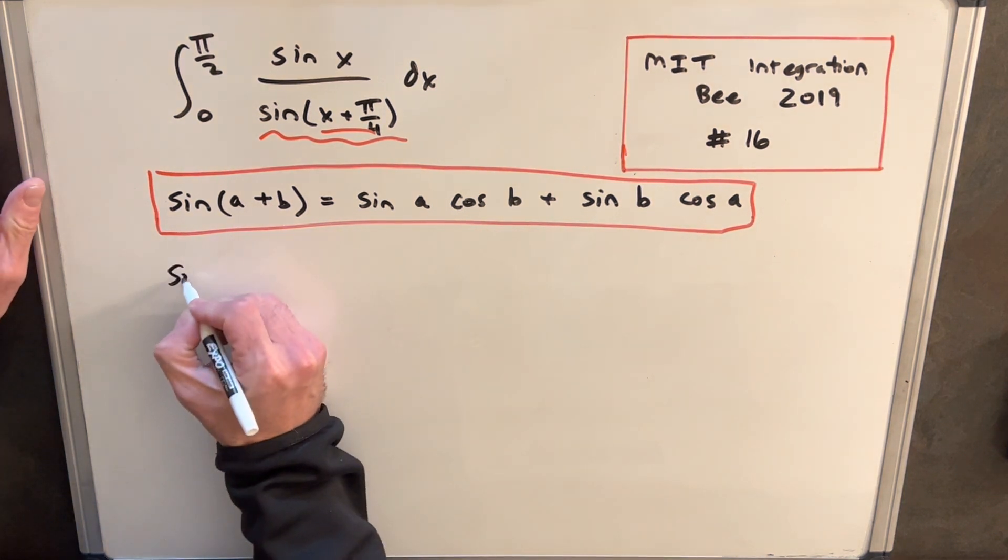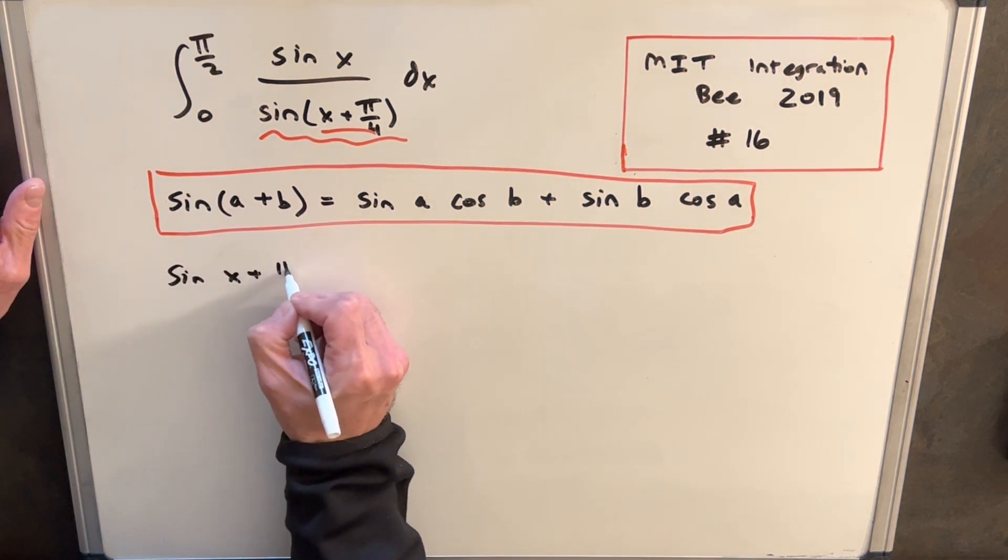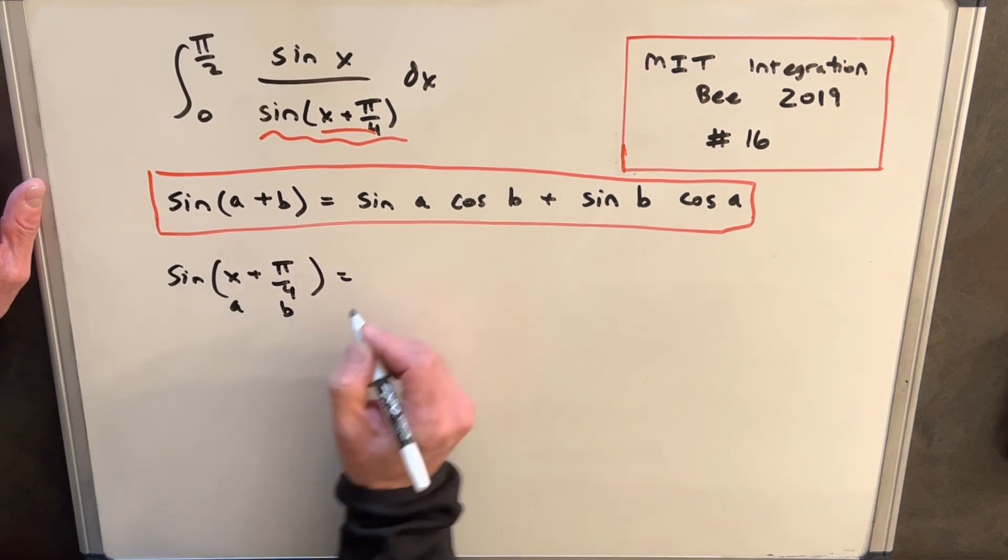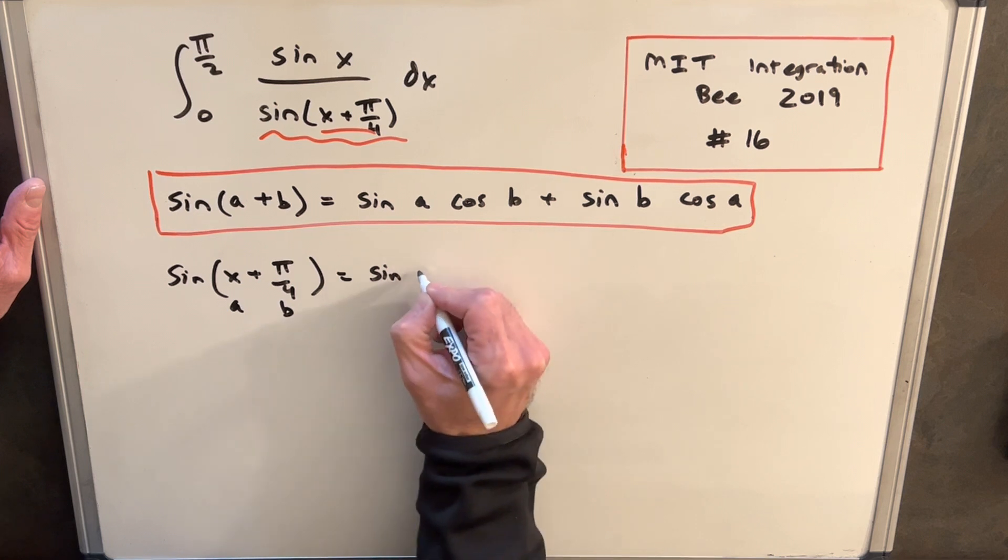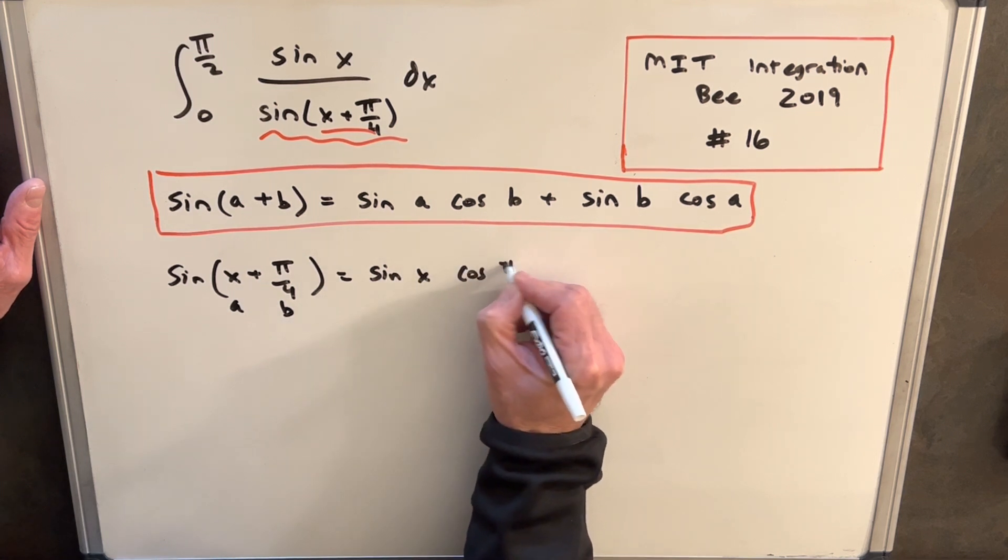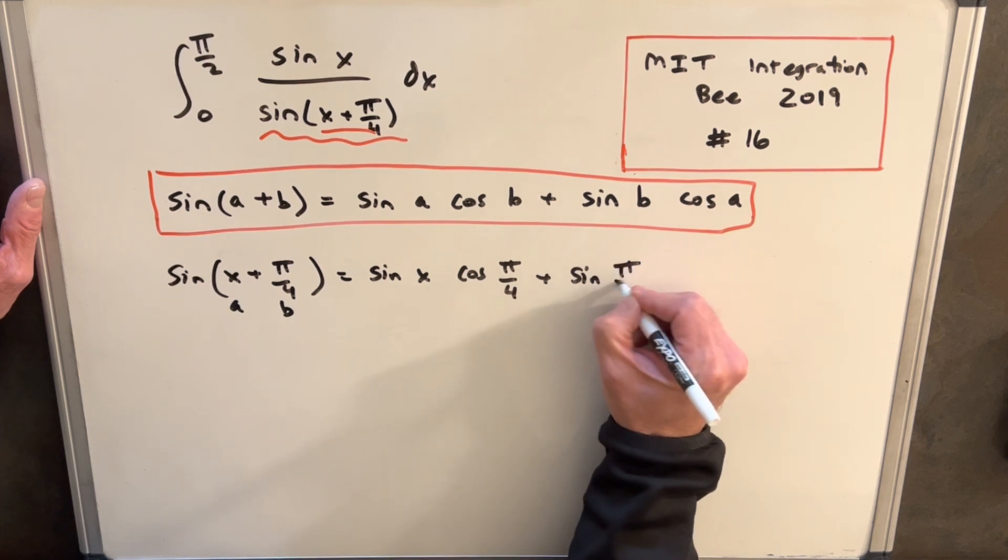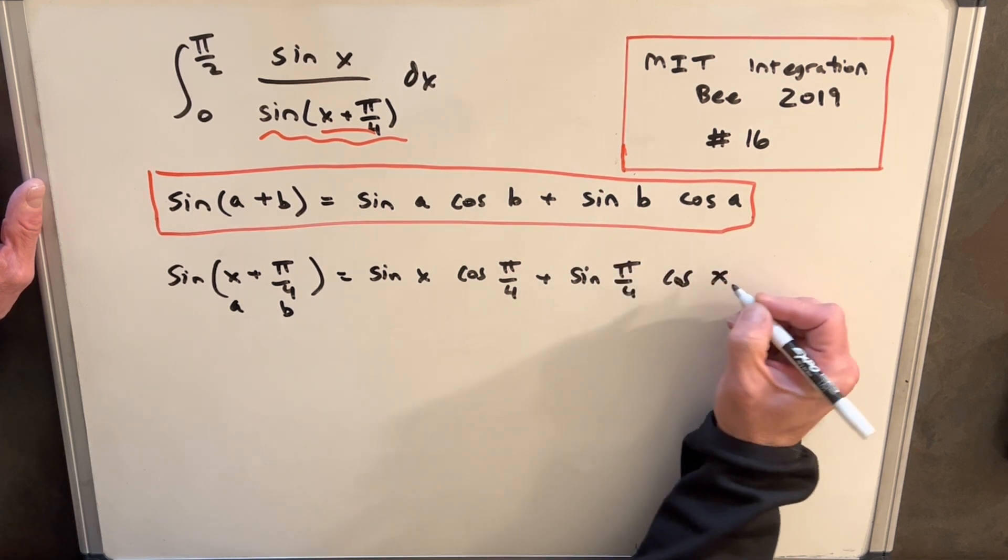So we'll just rewrite our sine of x plus pi over 4. Our a value is x and our b value is pi over 4, so we're going to have sine x cosine pi over 4 plus sine pi over 4 cosine x.